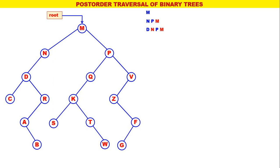The leftmost is D. The post-order for D is C, R, D — with D processed. Therefore, D is replaced by C, R, D with D processed. Next, the leftmost is C. The post-order for C is C only, with C processed. Next, the leftmost is R. The post-order for R is A, R — with R processed. Therefore, R is replaced by A, R with R processed.